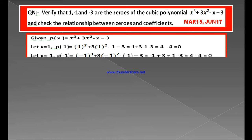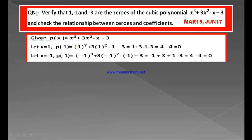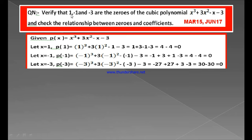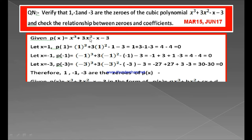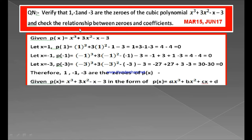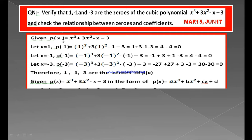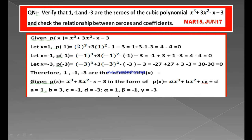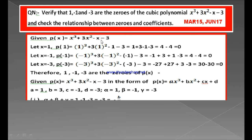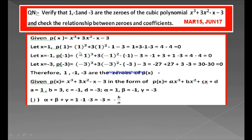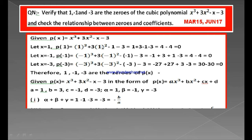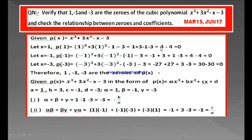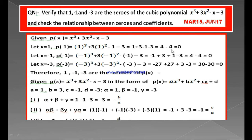We have to verify that 1, minus 1, and minus 3 are the zeros of this cubic polynomial. In order to verify, let us substitute x is equal to 1. The given polynomial is P of x equals x cubed plus 3x squared minus x minus 3. Substituting x equals 1: 1 cube is 1, 1 square is 1, 1 into 3 is 3, so we get 1 plus 3 minus 1 minus 3.